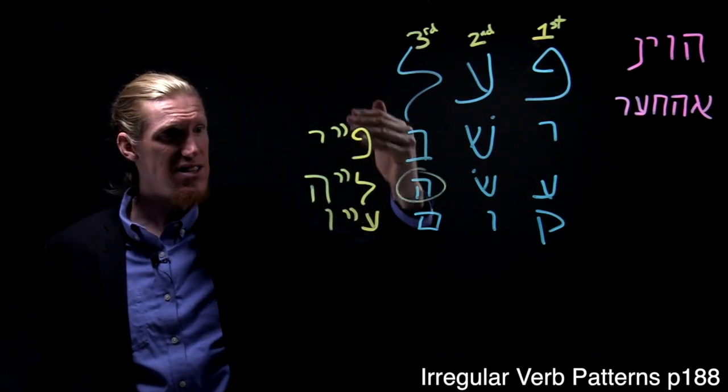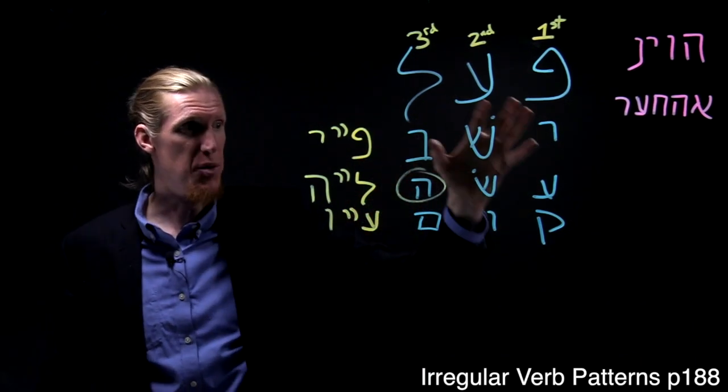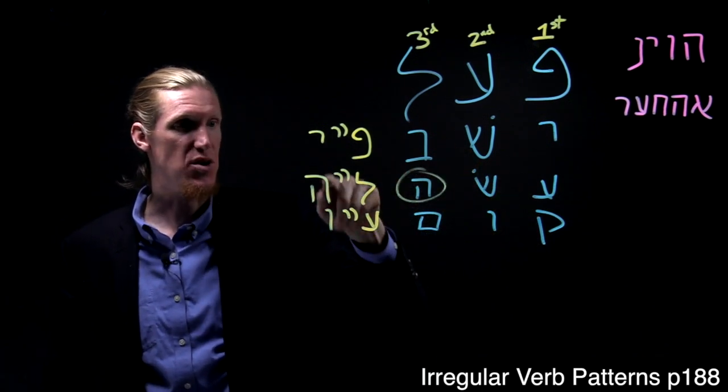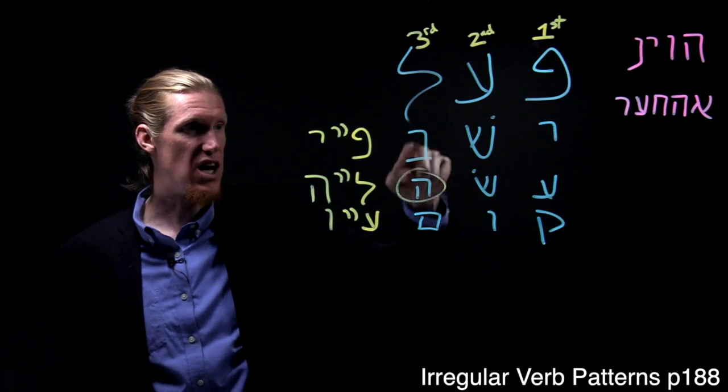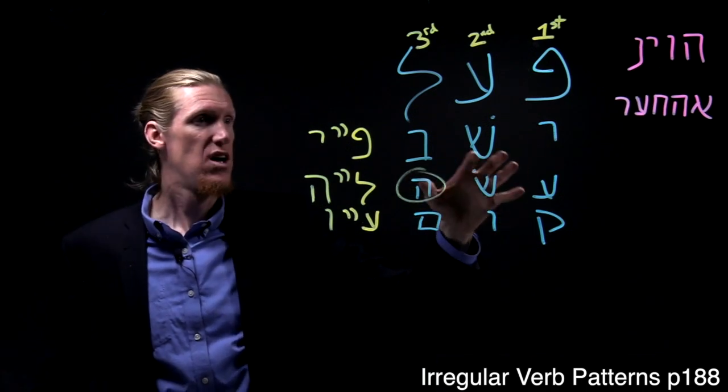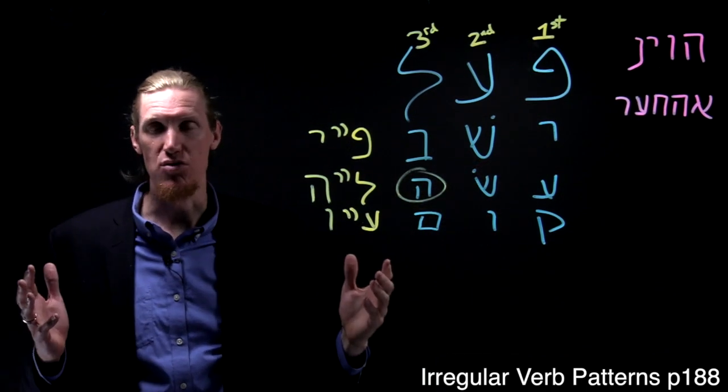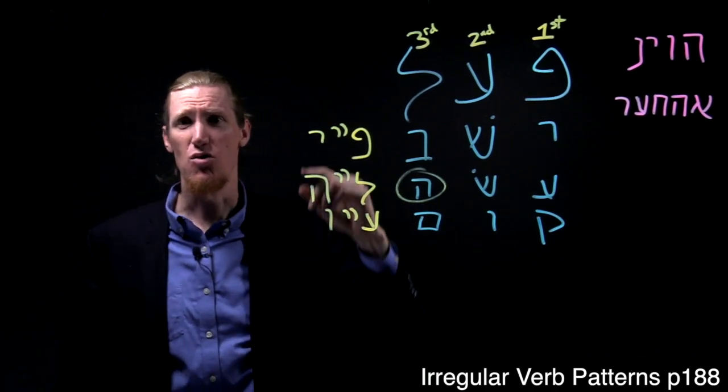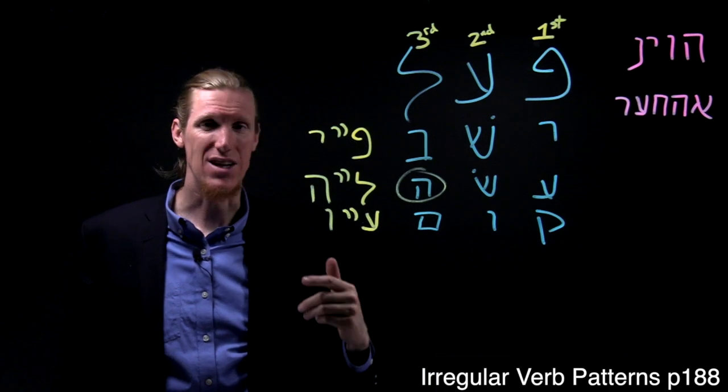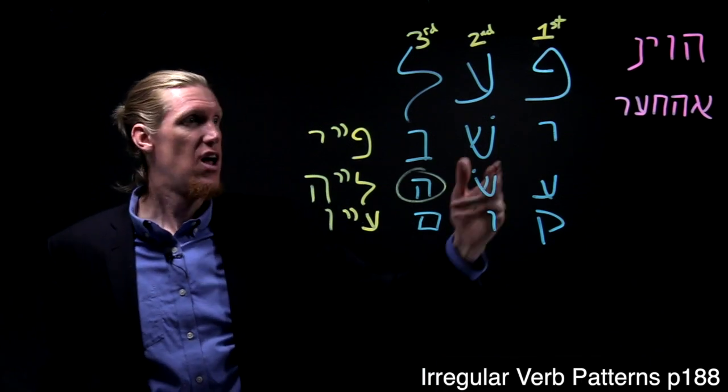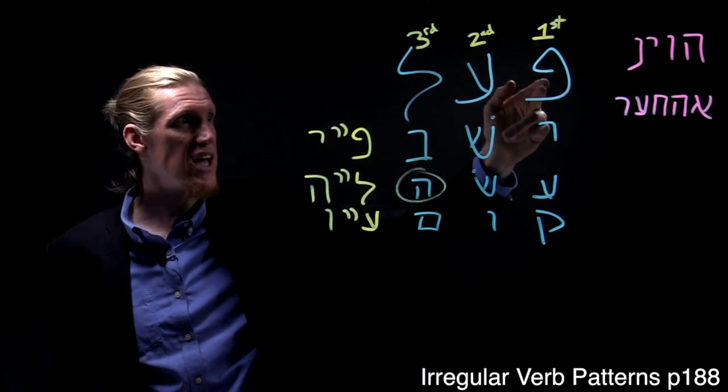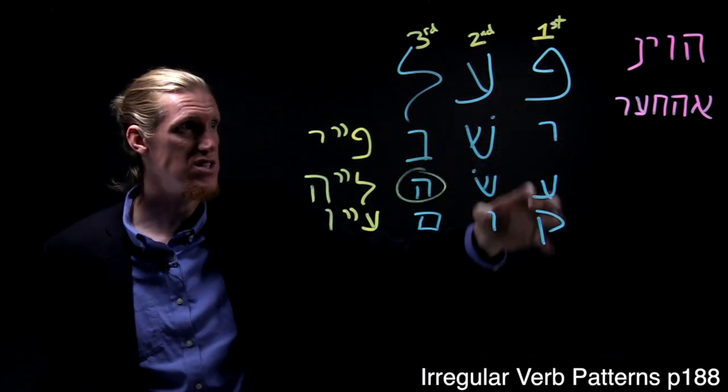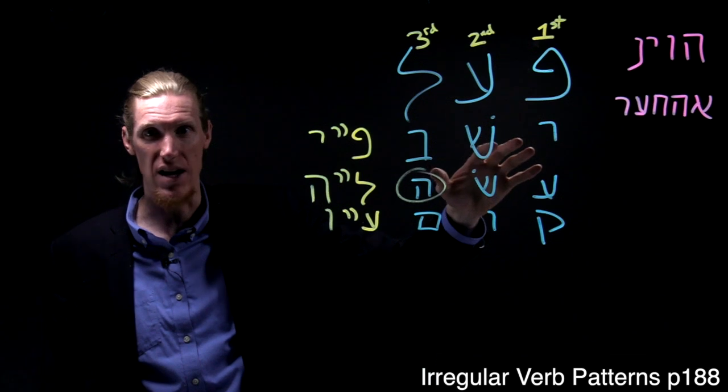These names describe the patterns created by this particular letter appearing in whichever root position. So Hebrew, a lot of Hebrew verbs are irregular, but they're regular in their irregularity. So every time you have a Pei Yod verb, regardless of what the other two letters are, it's going to be affected in the same way every time.